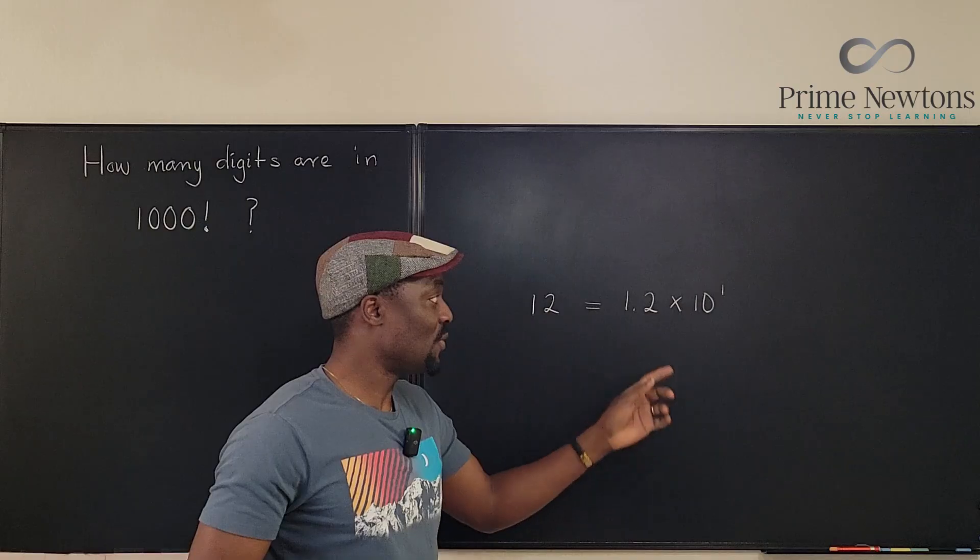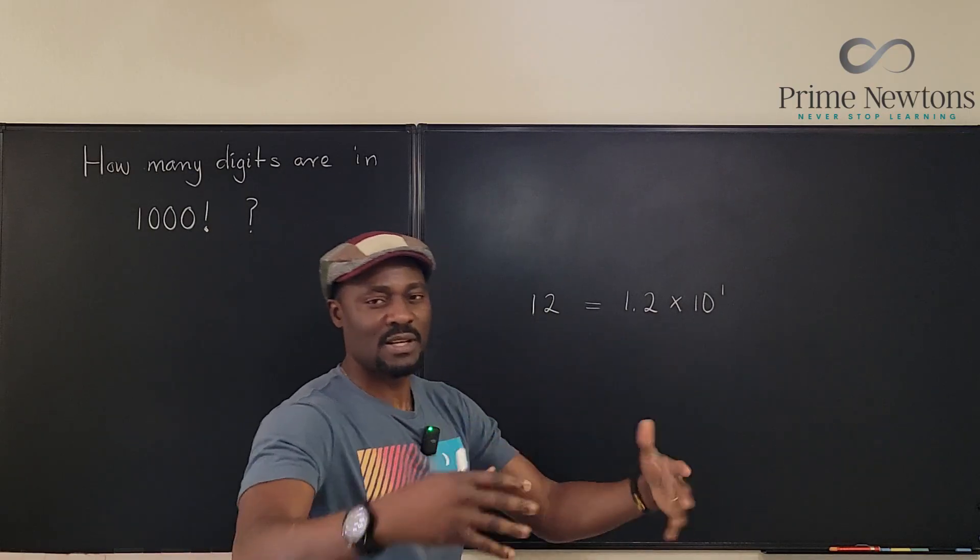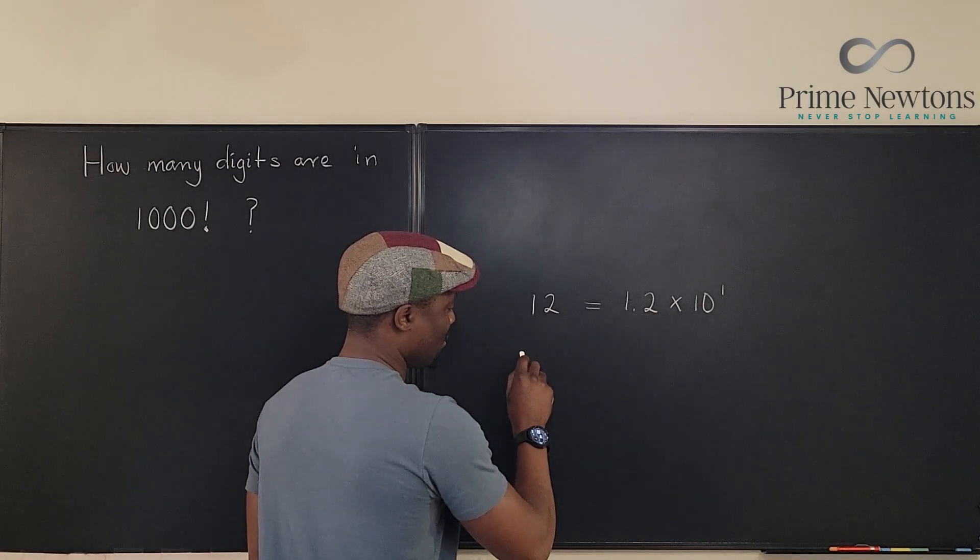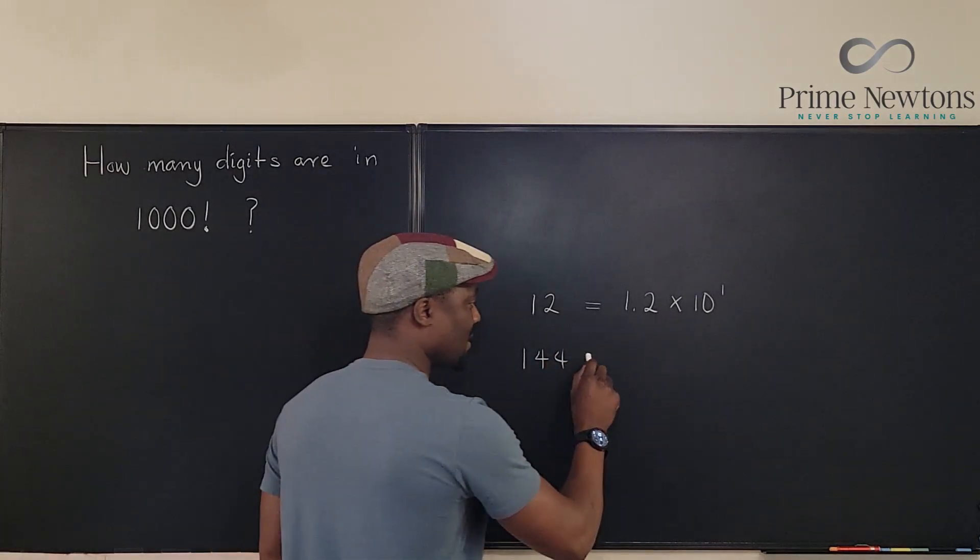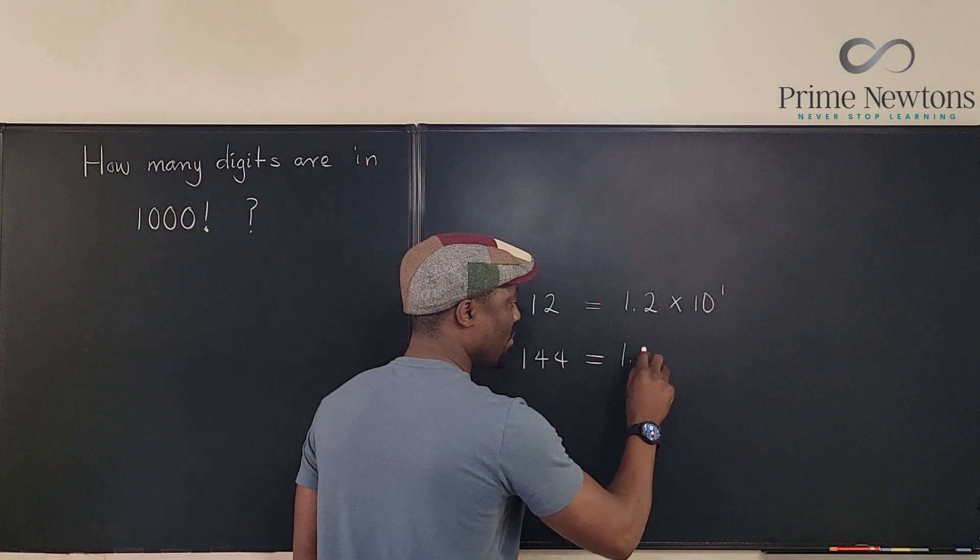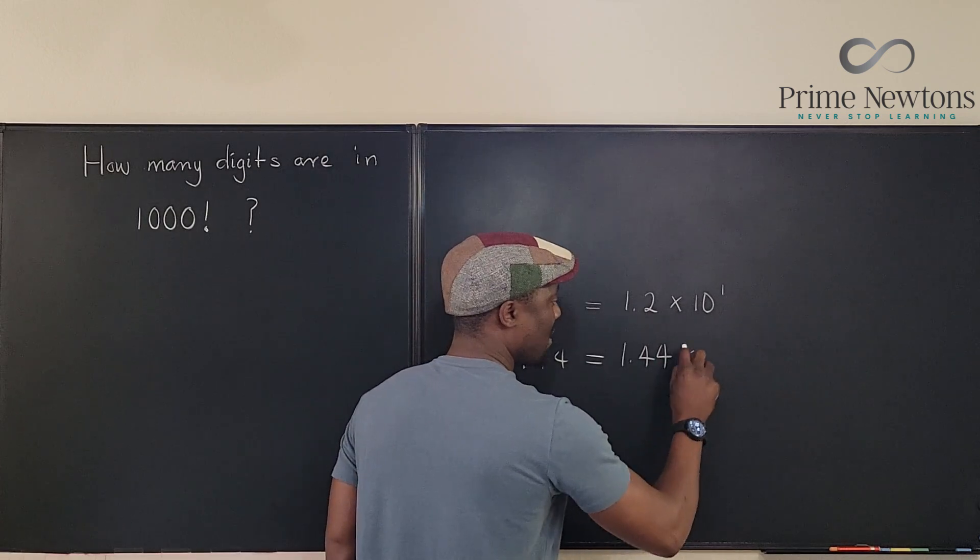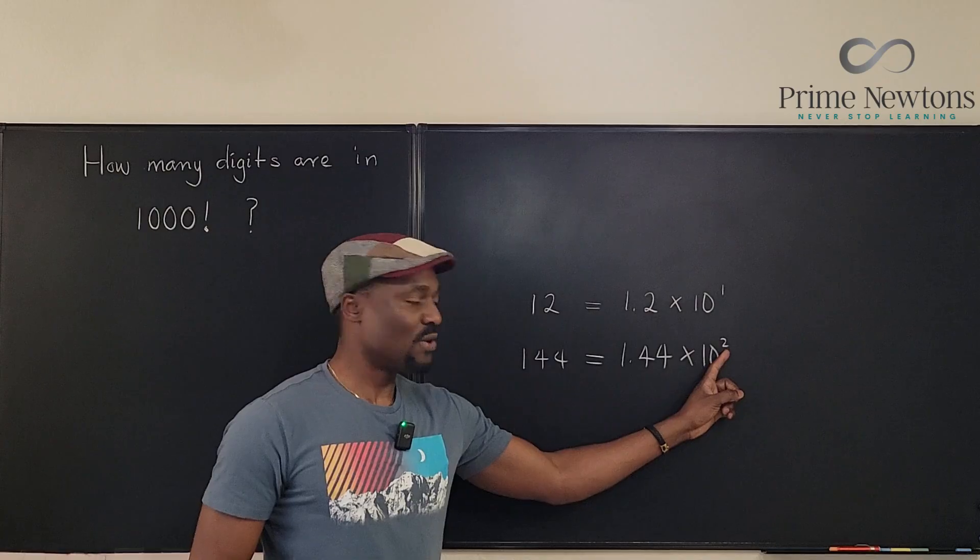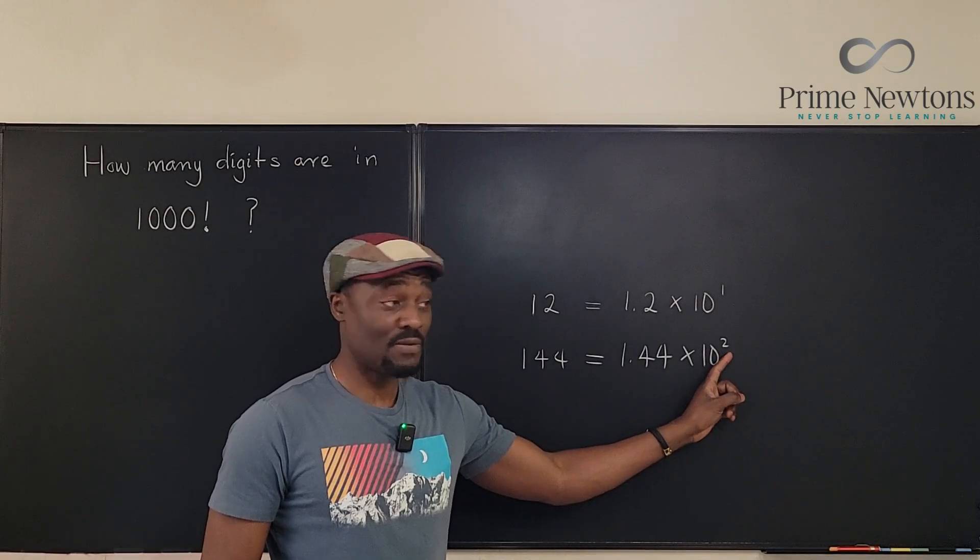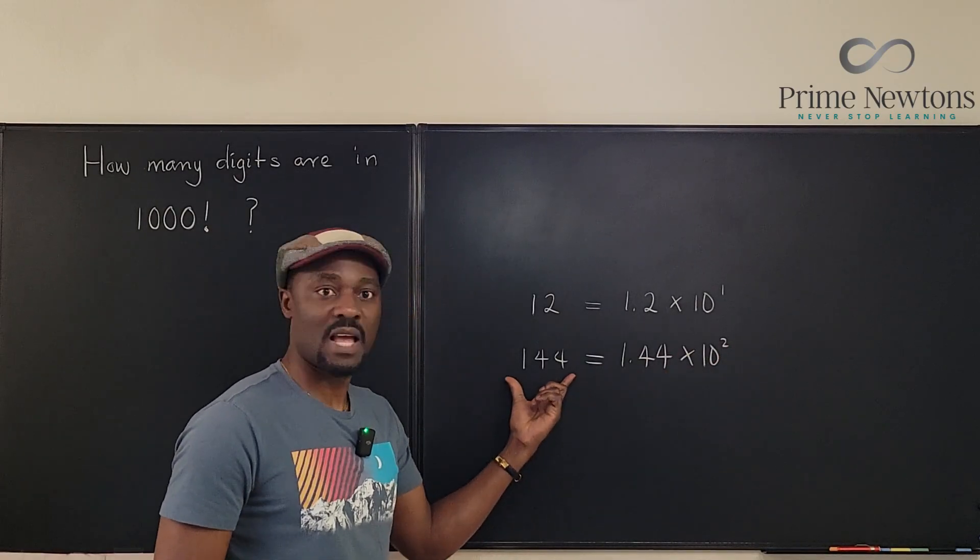It is the ceiling of what you would get if you take the logarithm. Let's take another example. Let's take 144. 144 in standard notation is 1.44 times 10 to the second. Do you notice that this has 3 digits, and what you have here is 2? If you add 1 to this, you're going to get this answer.